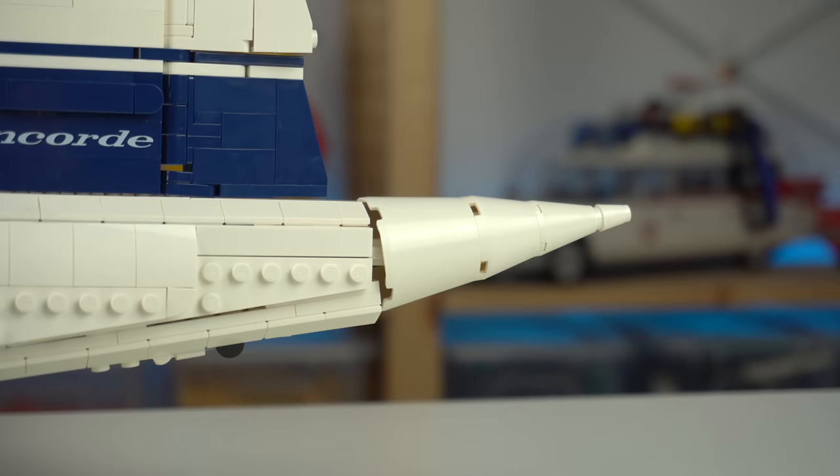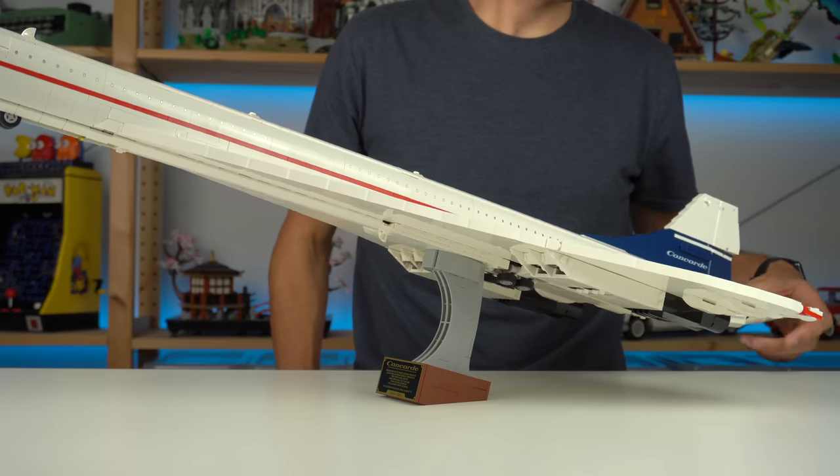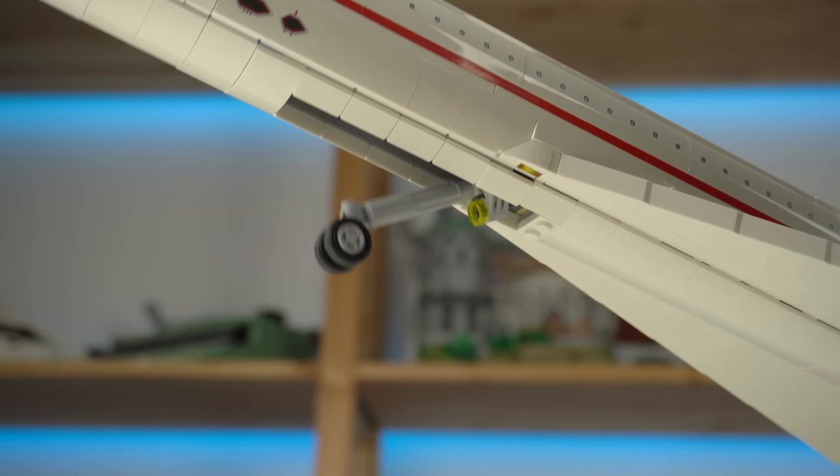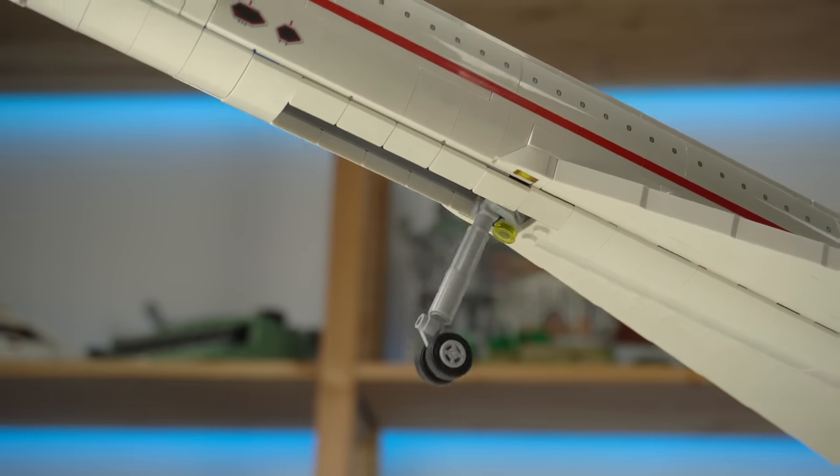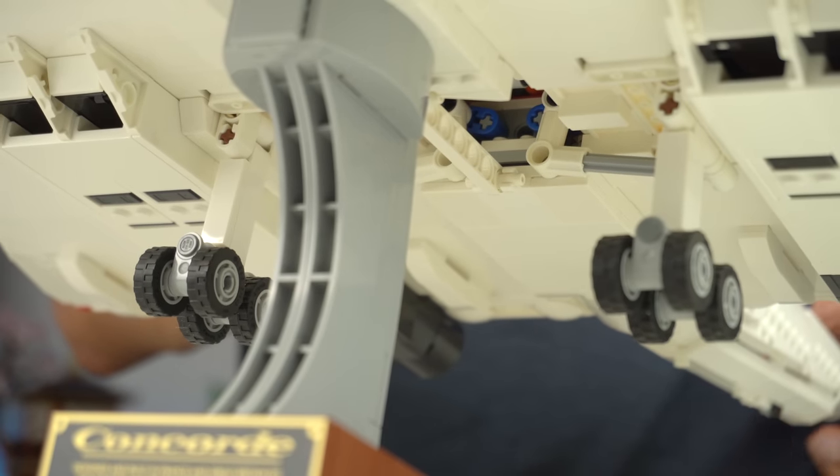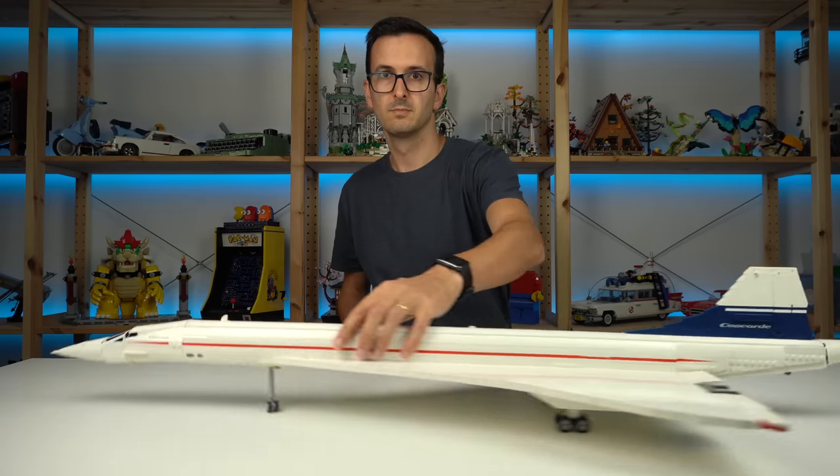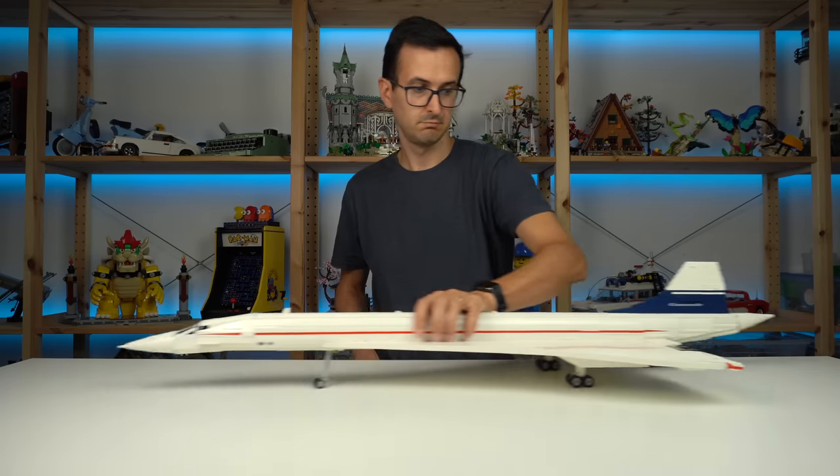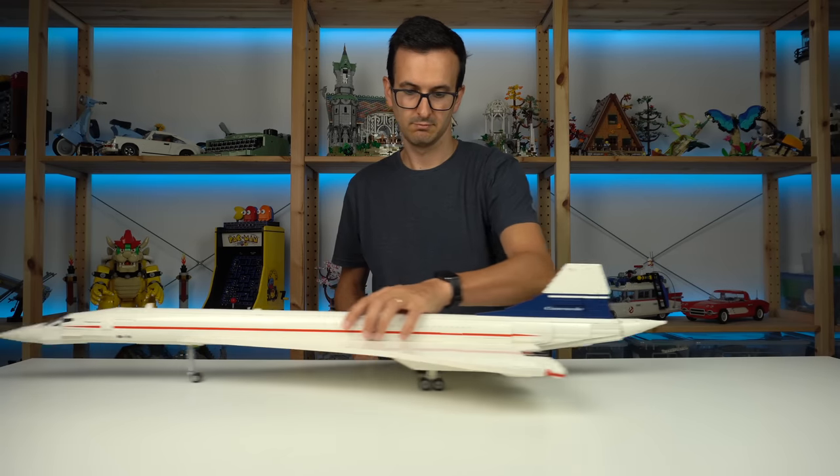There's another copy of it in the tail section that can be turned to deploy the landing gear. How cool is that? Both the front landing gear and the back one in sync. And despite the flimsy look I'm surprised at how well it handles the weight of the whole model and how you can move it around.